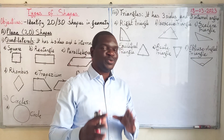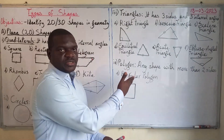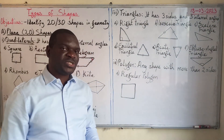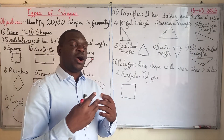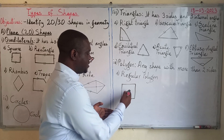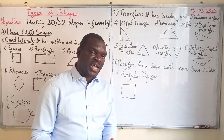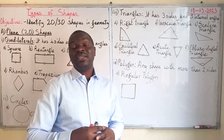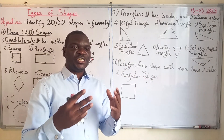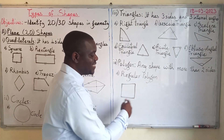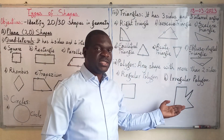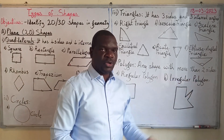The last type of two-dimensional shapes are polygons. A polygon is any shape with more than two sides, so quadrilaterals and triangles are all polygons. Polygons can have five, six, seven, eight, nine, or ten sides. A regular polygon has more than three sides with all sides equal, while an irregular polygon has sides that are not the same length.